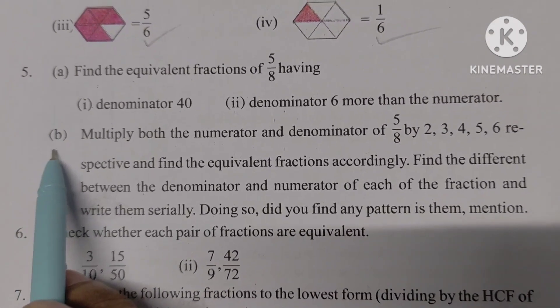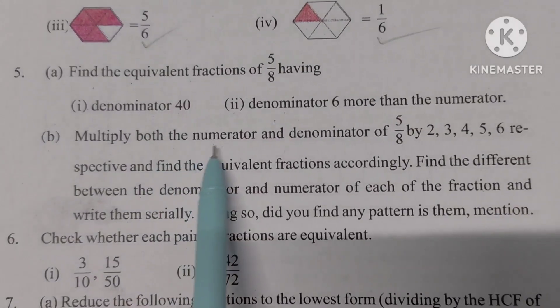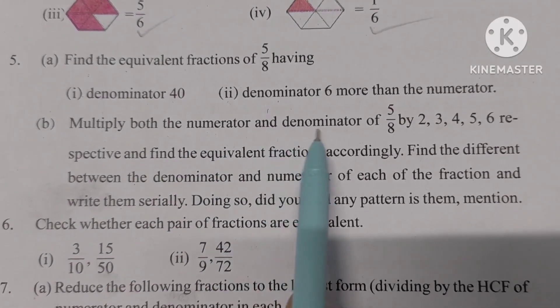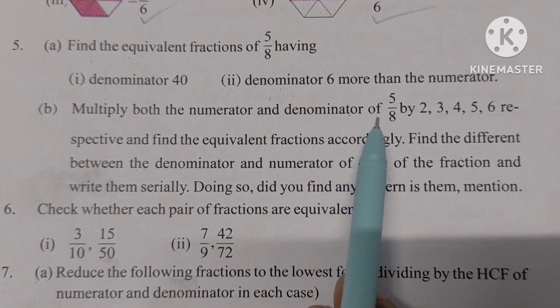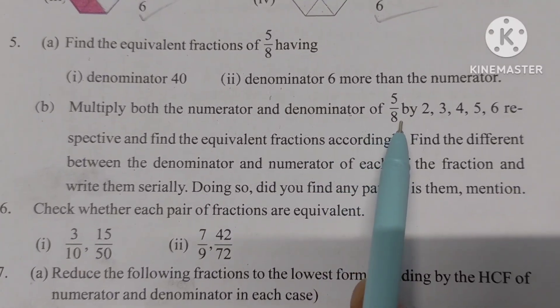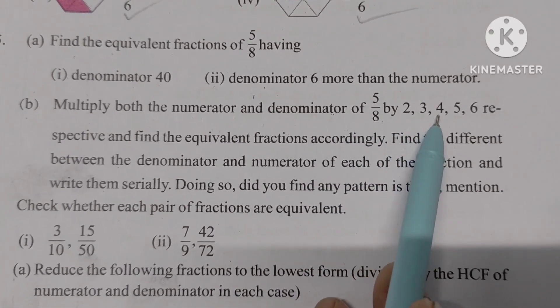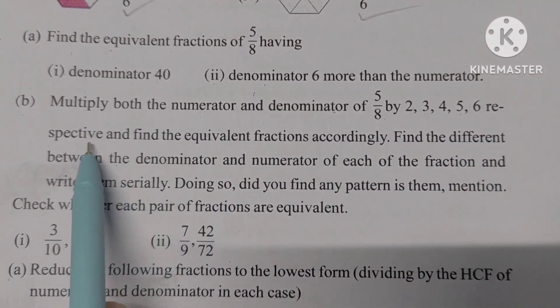Part B: Multiply both the numerator and denominator of 5 by 8 by 2, 3, 4, 5, and 6 respectively, and find the equivalent fractions accordingly.